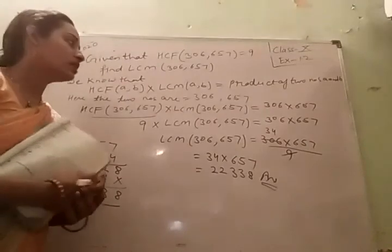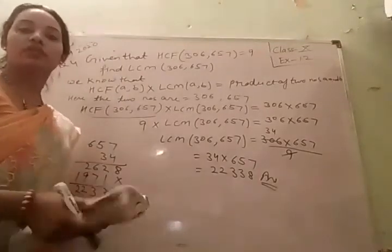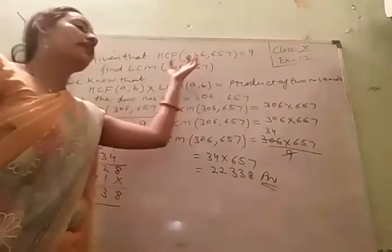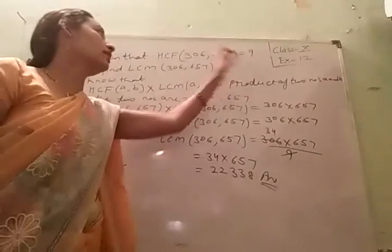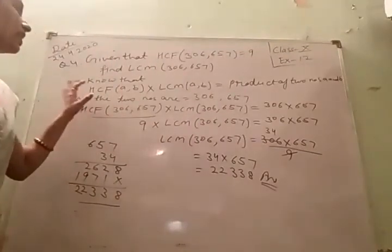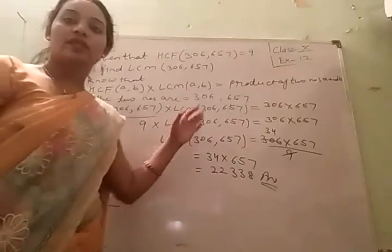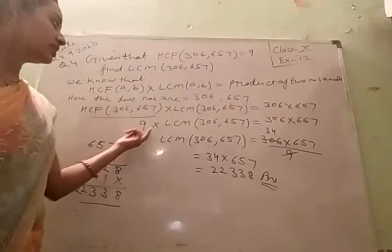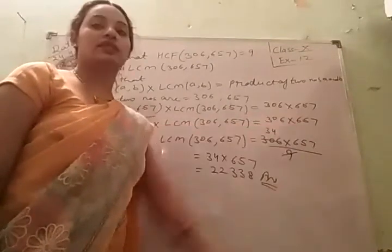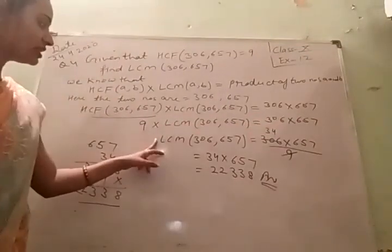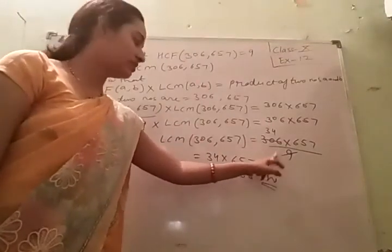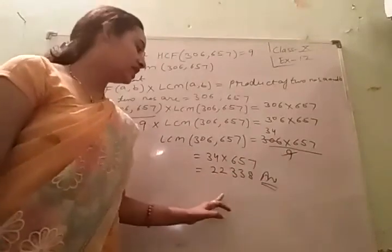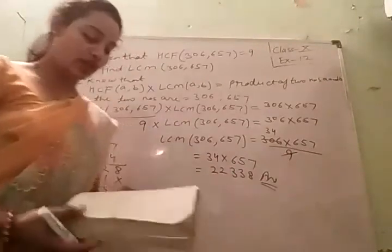Given that HCF is 9, we need to find LCM. We know LCM × HCF equals the product of two numbers. Putting HCF = 9, LCM is equal to 306 × 657 ÷ 9. The 9 goes to the denominator, giving us 34 × 657, and we get the answer 22,338.